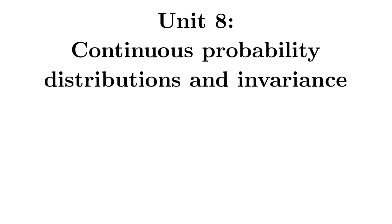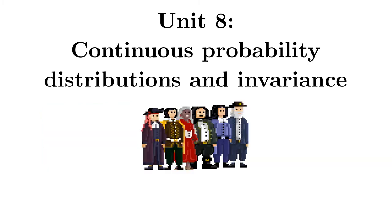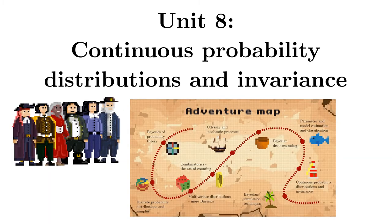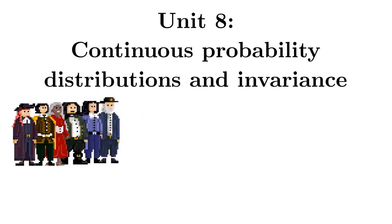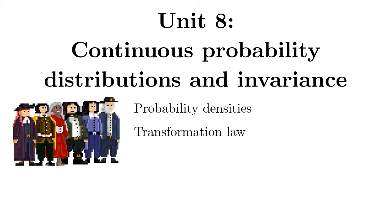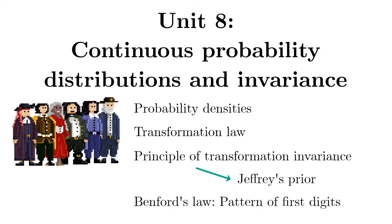Welcome to the eighth unit of the course on Bayesian probability theory. My name is Wolfgang von der Linden and I will enable you to help Captain Bayes and her crew deal with continuous variables and to learn how to assign prior probabilities. We will learn how to work with probability densities instead of probability mass functions, how to use the transformation law to locate the lighthouse, and the principle of transformation invariance will allow us to derive Jeffrey's prior. We will also study the probability distribution of the first digits of mathematical tables.